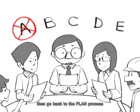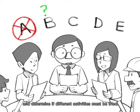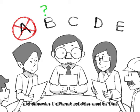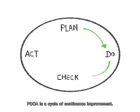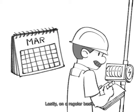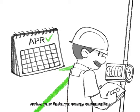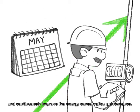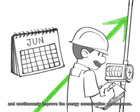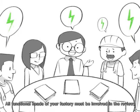PDCA is a cycle of continuous improvement. Lastly, on a regular basis, review your factory's energy consumption and continuously improve the energy conservation performance. All functional heads of your factory must be involved in the review.